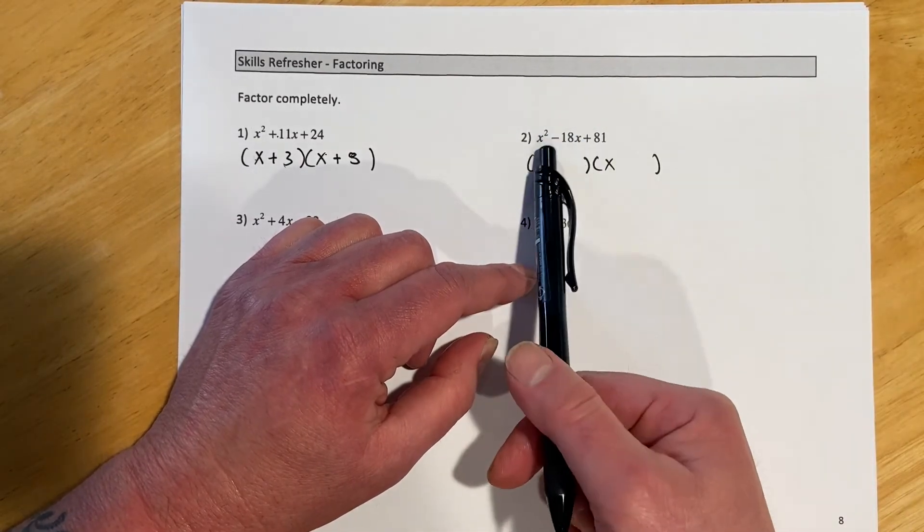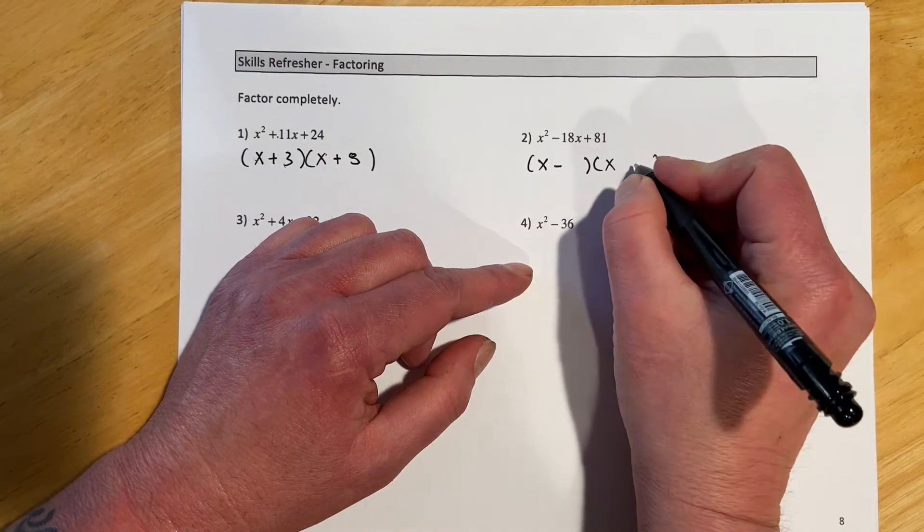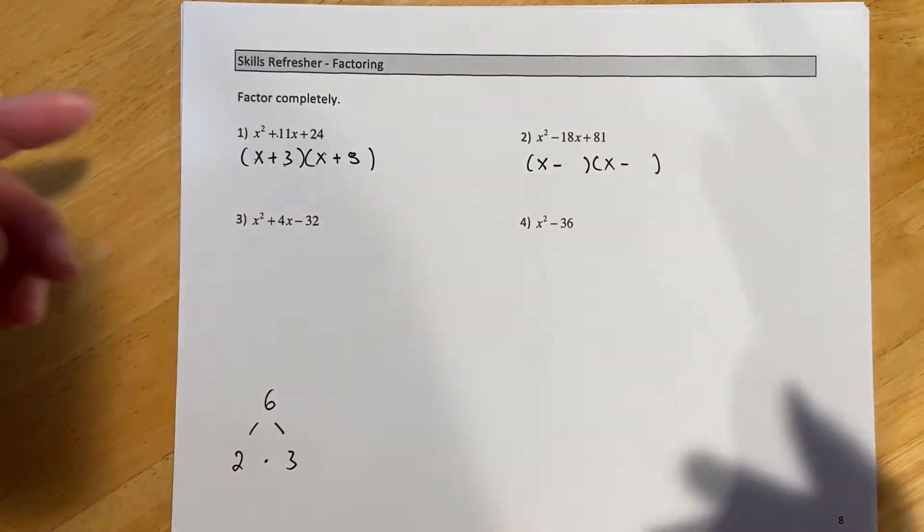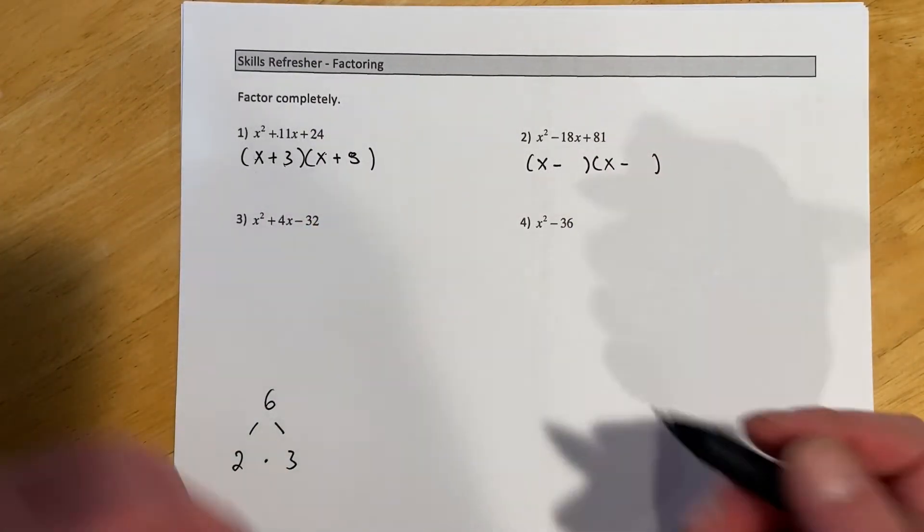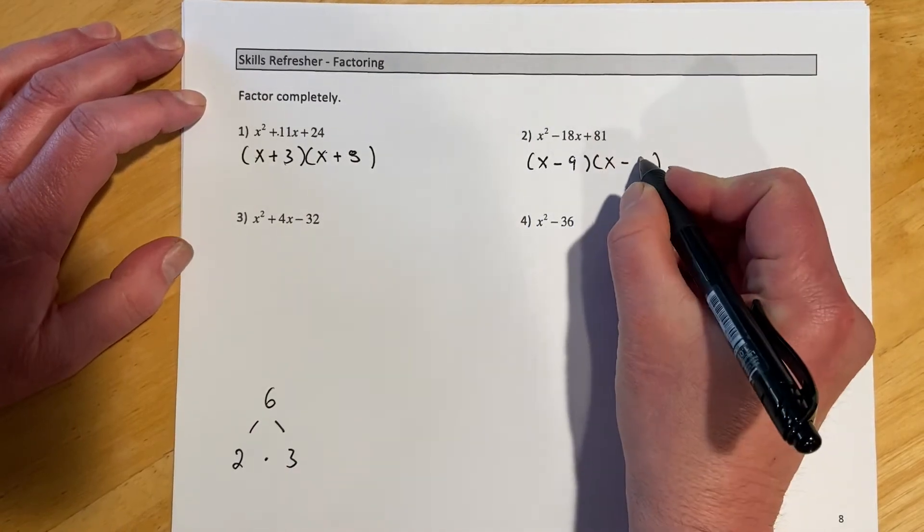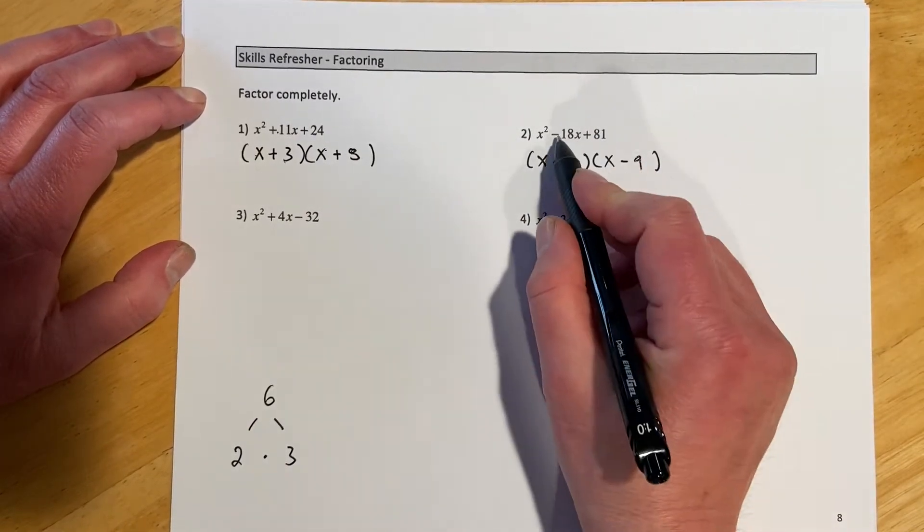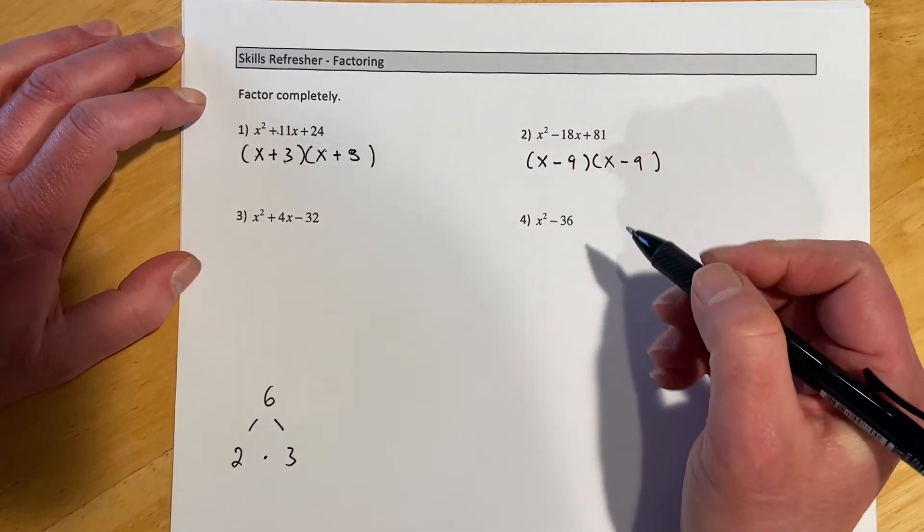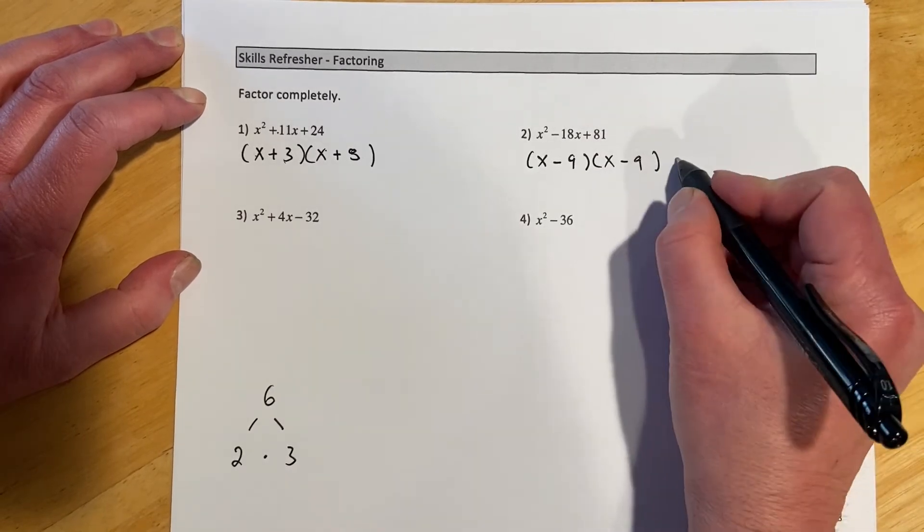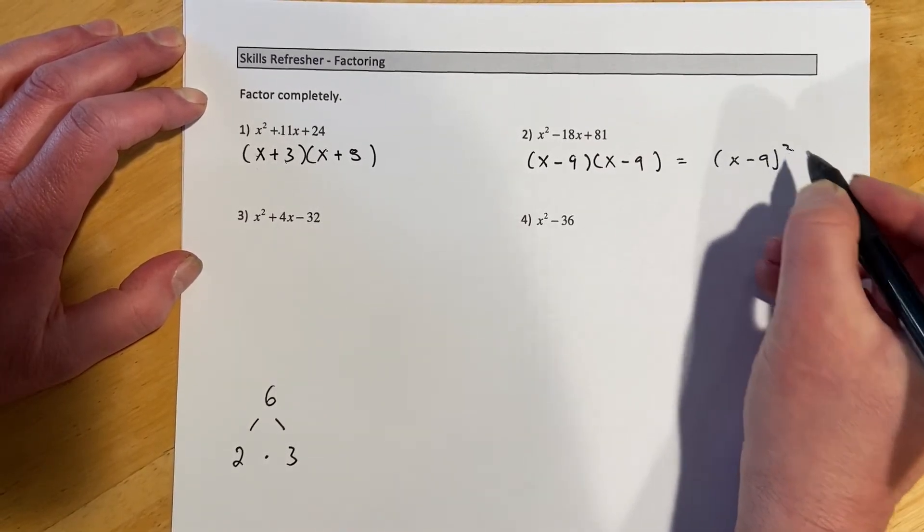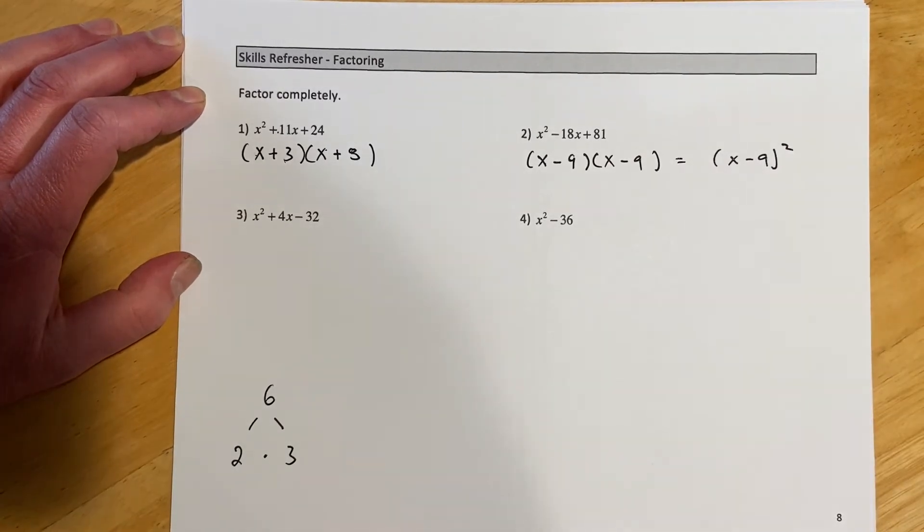So this time notice they're multiplying to be positive and adding to be a negative, so that means they both have to have negative signs because multiplying two negatives will make it come out positive. And then 9 times 9 would make 81 and add to negative 18. You can also write this x minus 9 quantity squared—those mean the exact same thing.